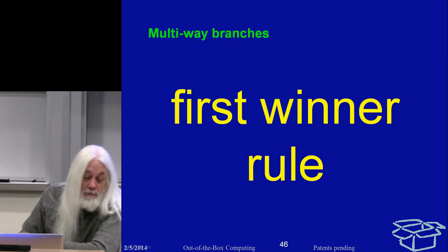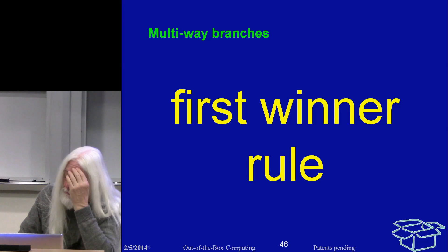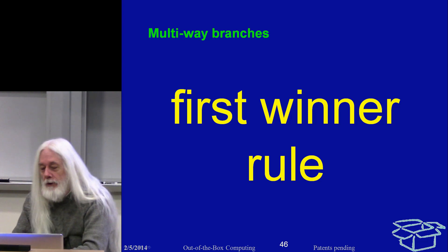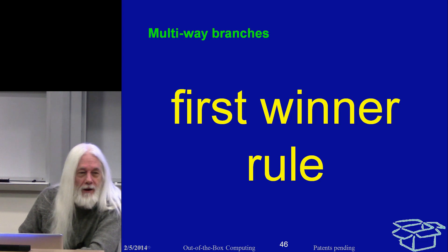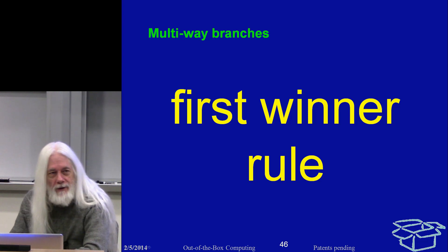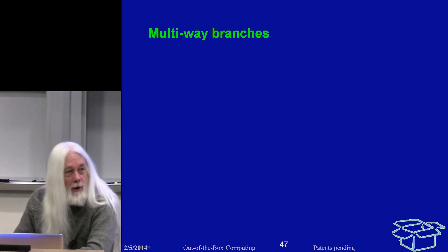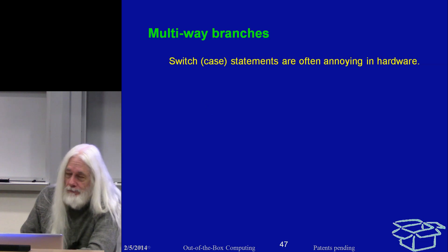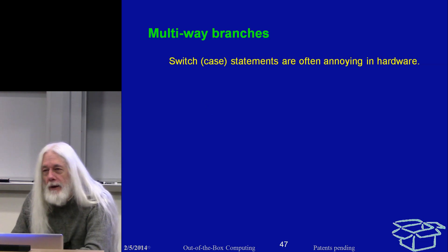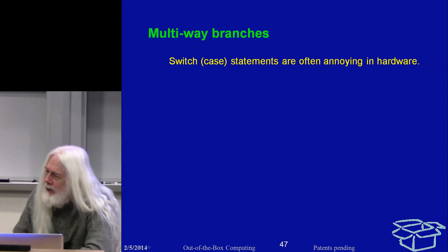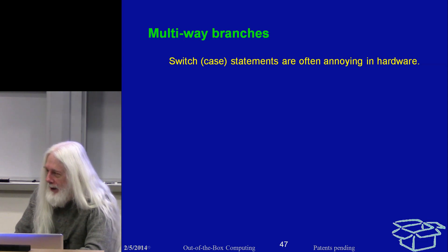Now there are some operations that, while you'd like to issue them in parallel, they cannot execute in parallel — and control flow is the most important of these. We want to be able to have a bunch of branches in one instruction: multi-way branches. The typical example is a switch or case statement, which tends to be truly annoying in hardware.